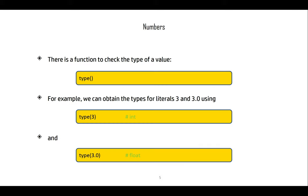How do we know the type of a literal? We can use the type function. If we place 3 as a parameter to the type function, it will output a string indicating the value is of type int. If you place 3.0 as the parameter, it will output a string indicating this is of type float.